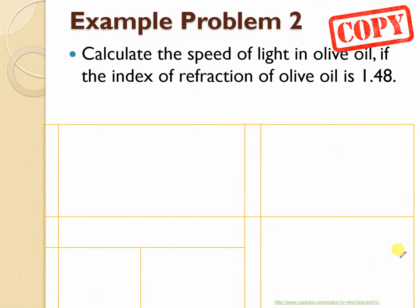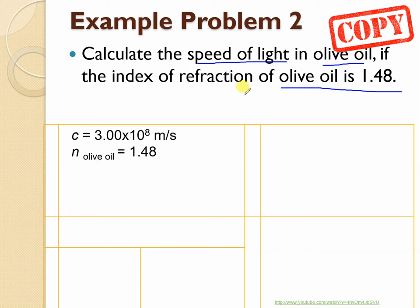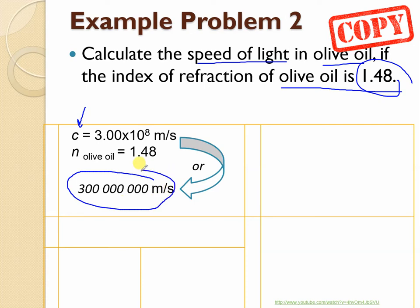Now there's a second type of question we can do. We're going to calculate how fast light can travel in a substance. Calculate the speed of light in olive oil if the index of refraction of olive oil is 1.48. Let's consider what we know here. We know C, it is a given, it is a constant, 3.0 times 10 to the 8 meters per second. And then we also have this 1.48 given here. We could write this 3.0 times 10 to the 8 as this: a 3 followed by 8 zeros. If you're more comfortable typing that number in your calculator, I say do it.